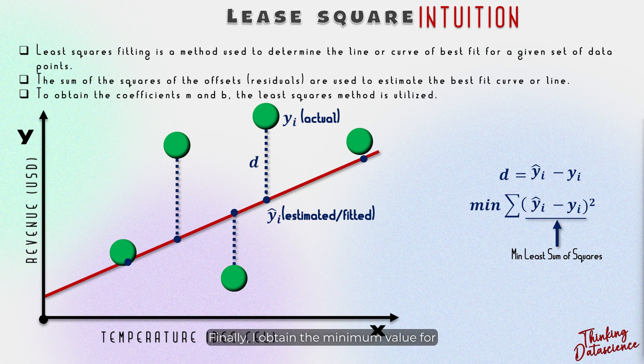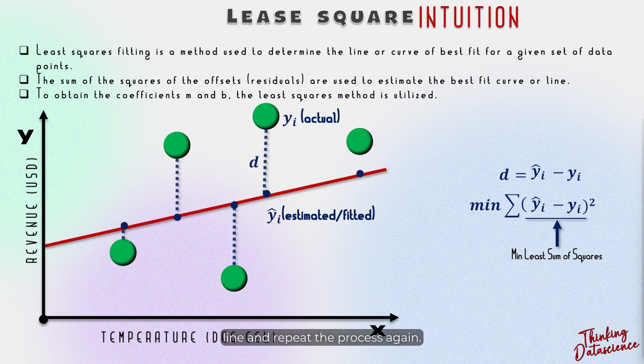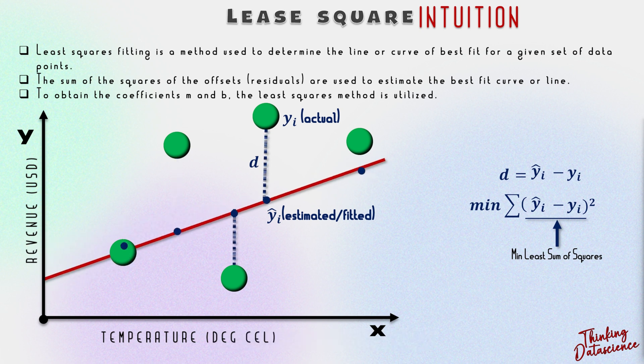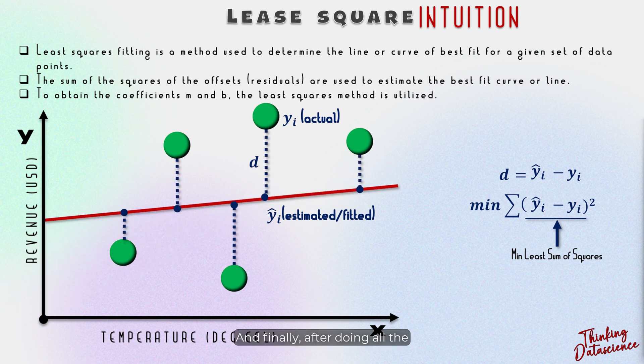Finally, I obtain the minimum value for all the sums of that red line. I then change the position of the red line and repeat the process again. After doing all the calculations considering the position of the red line, we will finally take the minimum value of all the outcomes and consider that as the best fit line. This is what the least sum of squares technique does.